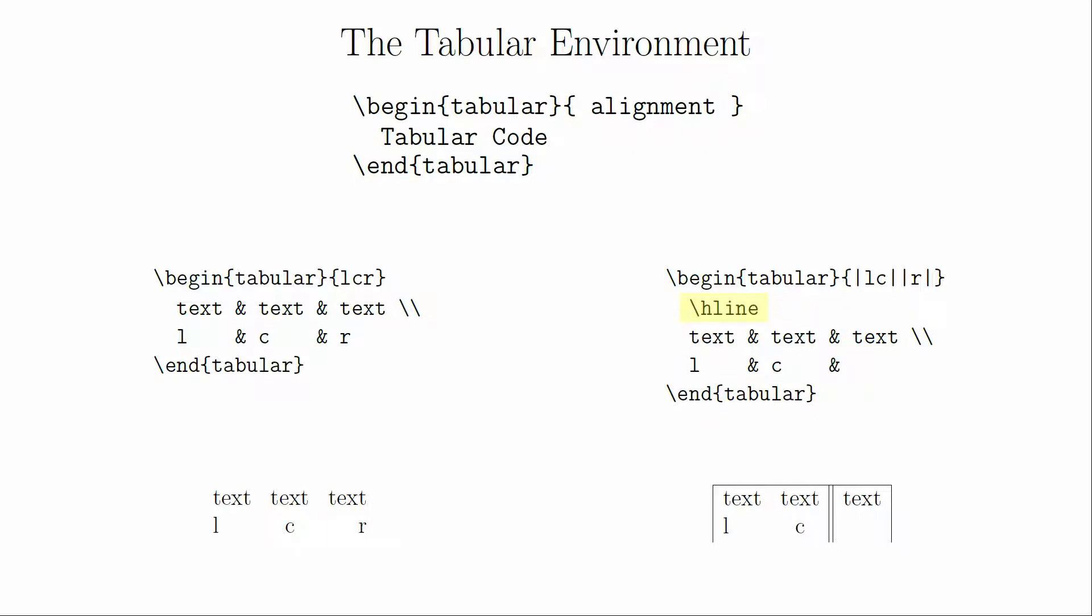To create a horizontal line through the table, use the hline command at the start of the row that's directly below where you want the line to be. This means that to create a line across the top of the table, you will need to call hline at the start of the first row of data. To create a line at the bottom of the table, you will need to create one row at the end that's empty except for the hline command. A double line can be created by using two hline commands.